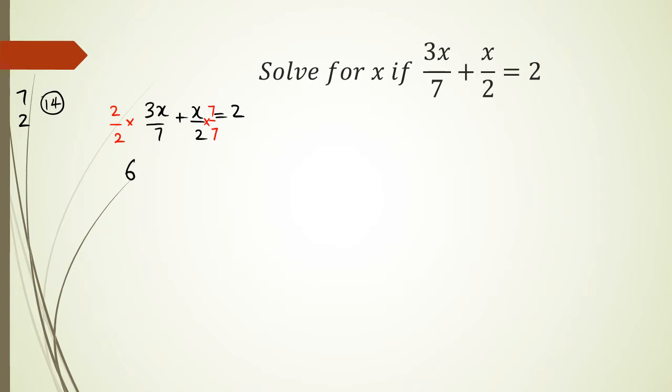Now 2 times 3x is 6x, 2 times 7 is 14, plus 7 times x is 7x, and 7 times 2 is 14. And all this is equal to 2.